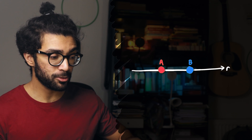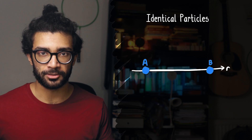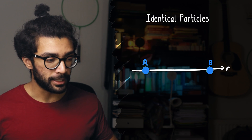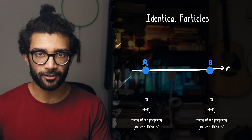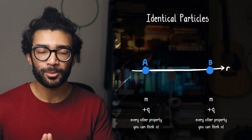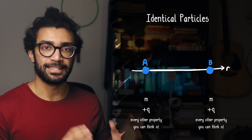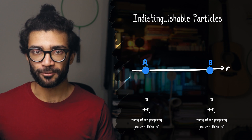We've got our two-particle system consisting of particles A and B. We're now going to assume that these two particles are identical to each other — identical in every way: the same mass, the same charge, the same every other property. But we're going to go a little bit further. Not only are we going to assume that these two particles are identical to each other, we're going to assume that they're indistinguishable from each other.